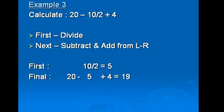In example 3, if we're asked to calculate 20 minus 10 divided by 2 plus 4, first we'll handle division, then addition and subtraction from left to right. In this case, it would be 10 divided by 2, which is equal to 5. Then the final step would be 20 minus 5 plus 4, which equals 19. So 19 would be the answer.